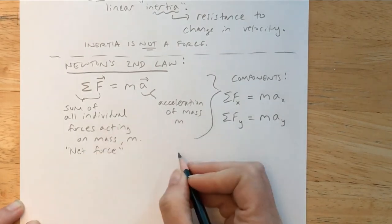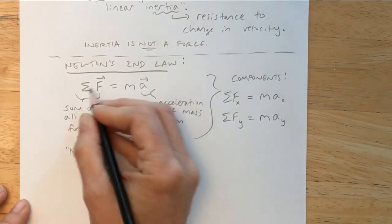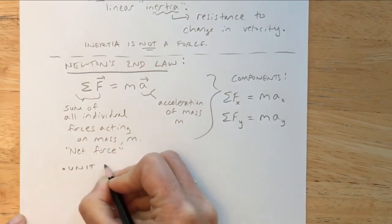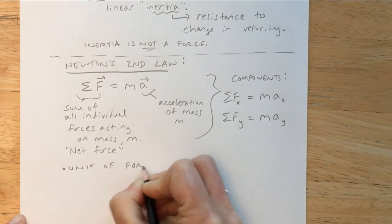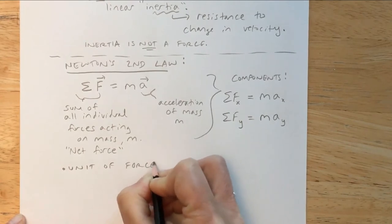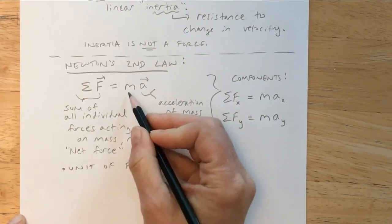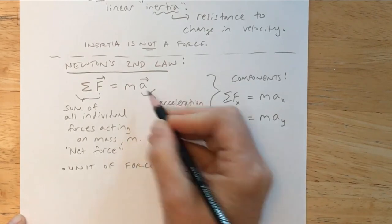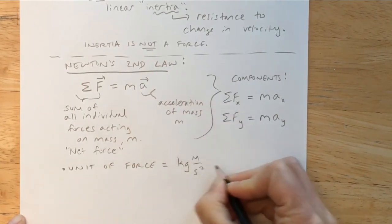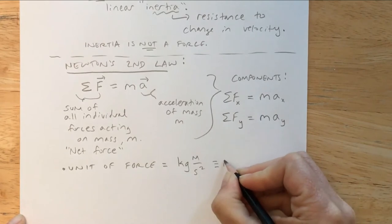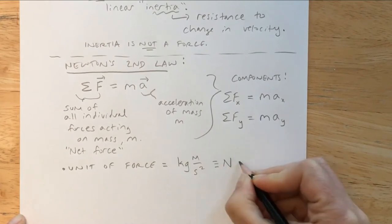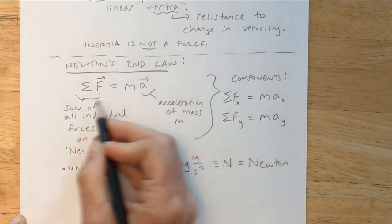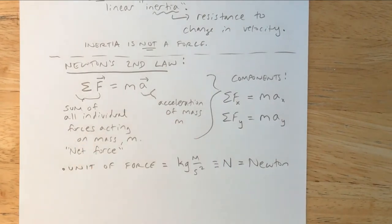Now we're talking about forces. Looking at the equation for Newton's second law, the unit of force equals mass times acceleration, which is kilograms times meters per second squared. That's what we define as a Newton, written as a capital N. You can look at the equation in order to figure that out.